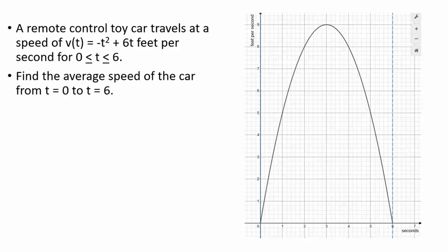A remote control toy car travels at a speed of v(t) = -t² + 6t feet per second for t from 0 to 6. Find the average speed of the car from t = 0 to t = 6. Here's a graph with seconds on the horizontal axis and feet per second on the vertical axis. The car starts from a speed of 0, speeds up reaching its maximum speed of 9 feet per second at 3 seconds, then slows down and comes to a stop after 6 seconds.